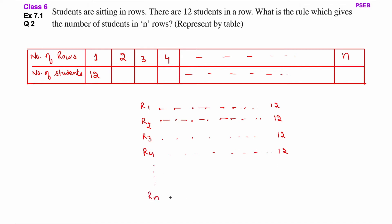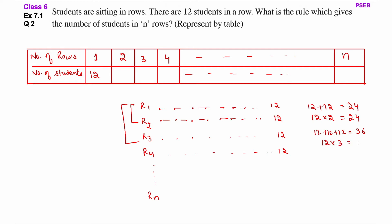Isi tarah se nth row tak jayegi. Each row mein 12 students baithenge. Toh agar 2 rows mein kitne students baithenge — 12 plus 12, yani 12 into 2, this is 24. Agar 3 rows mein — 12 plus 12 plus 12, yani 12 into 3, this is 36. 4 rows ke liye — 12 into 4, this is 48.